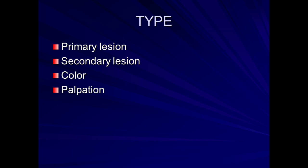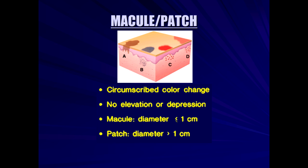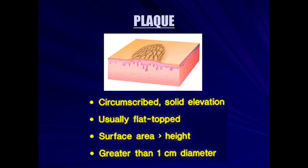A macule or patch, by definition, is flat — no elevation. If the lesion is less than one centimeter, it is a macule; if greater than one centimeter, it is a patch. A plaque would be circumscribed with solid elevation. If it's greater than one centimeter, we call it a plaque; if smaller, it's a papule — like the bumps seen in the acne patient. A larger flat-topped but raised area is definitely a plaque.